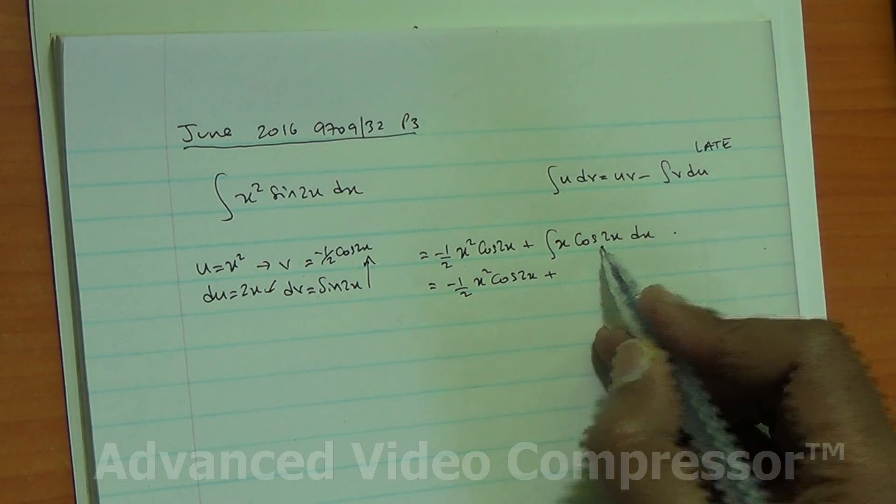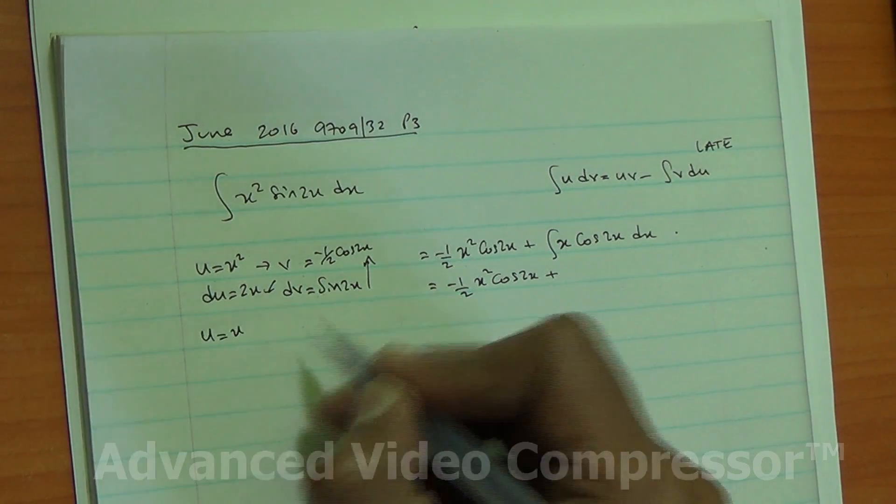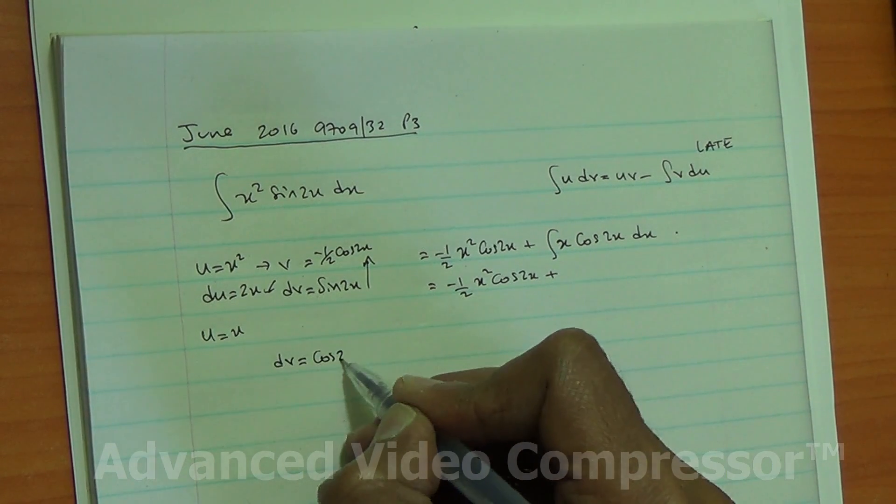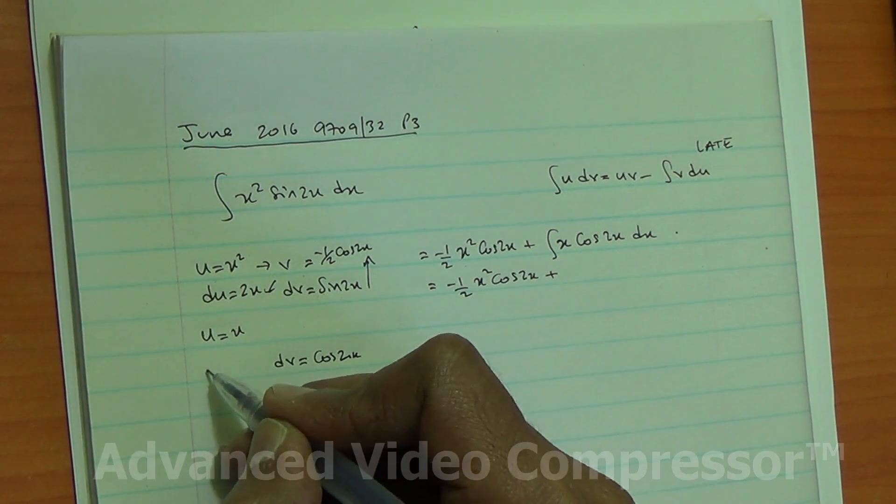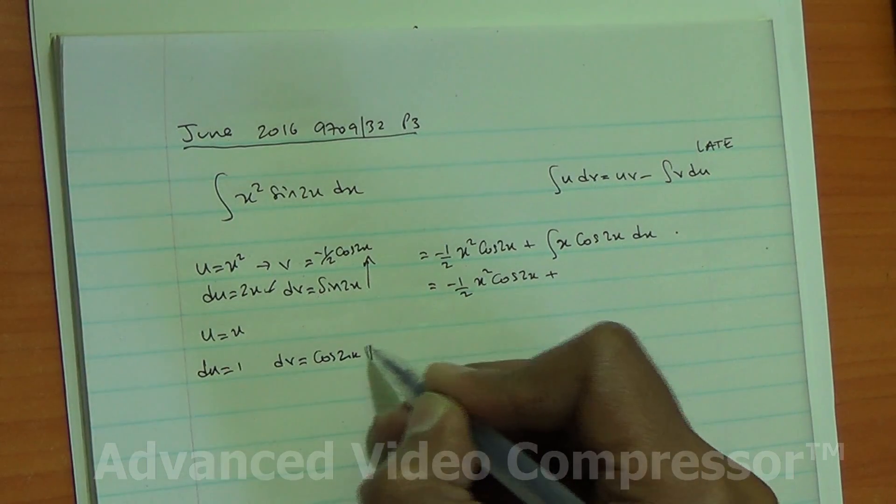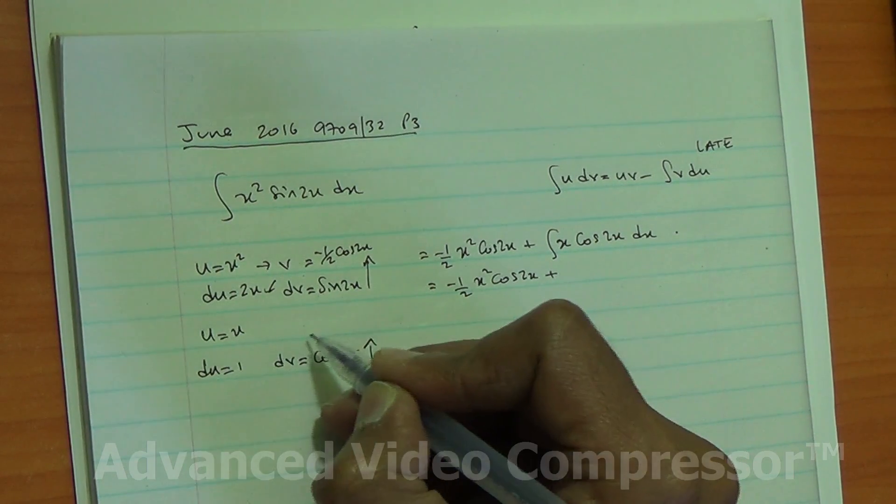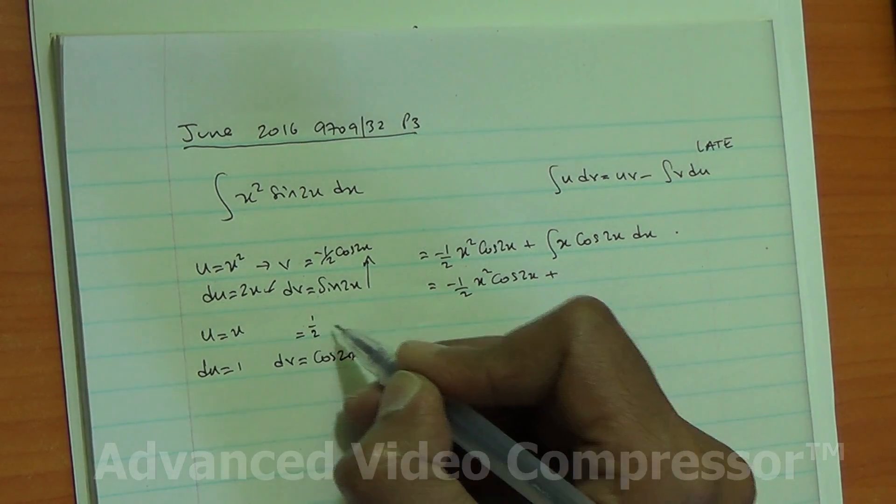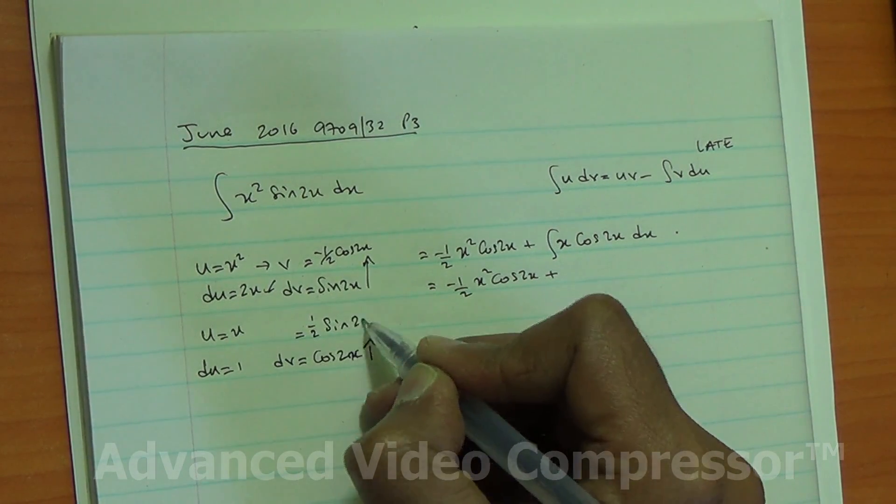u is equal to x, and dv is equal to cos of 2x. So if you differentiate that, you're going to get du is equal to 1. Integrating cos of 2x, you're going to end up with half sin of 2x.